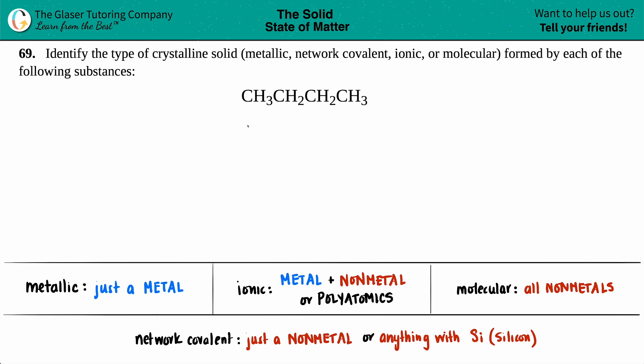Number 69, identify the type of crystalline solid, whether it's going to be a metallic, network covalent, ionic, or molecular crystalline solid that's formed by each of the following substances.